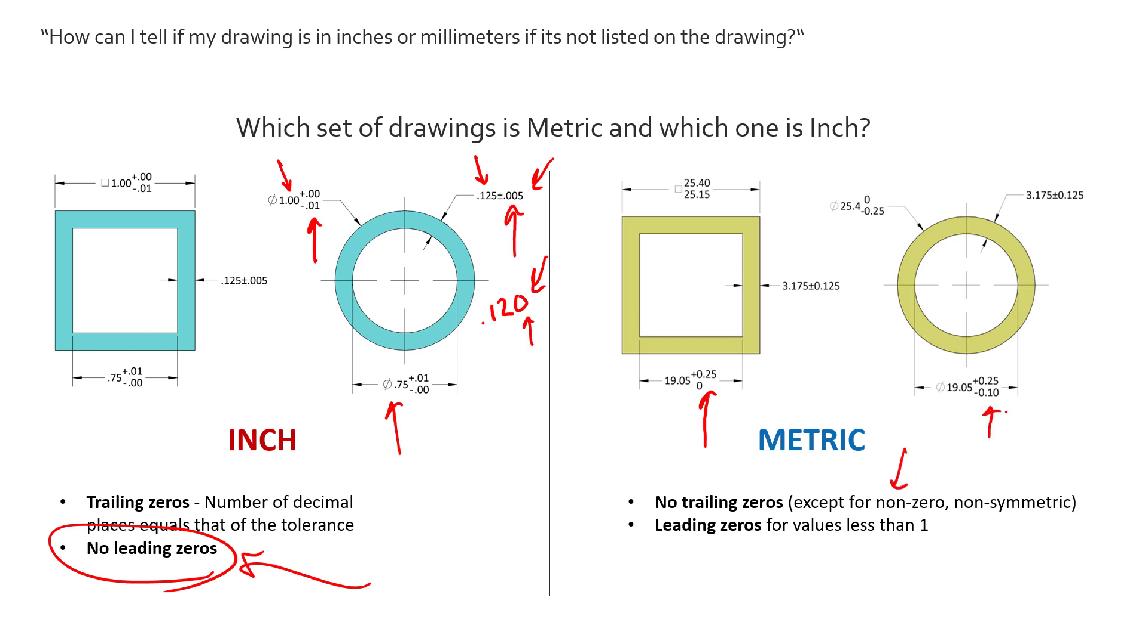Where over here we have a non-zero non-symmetric tolerance and we have to have a trailing zero to match the other side of the tolerance. So two decimal places here, we add a trailing zero to make sure the non-symmetric non-zero side has the same number of decimal places.